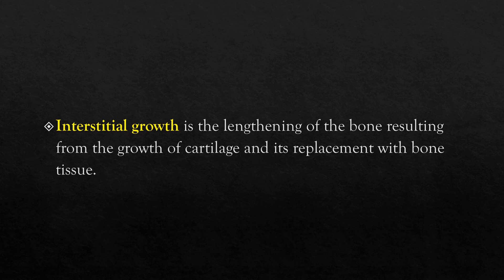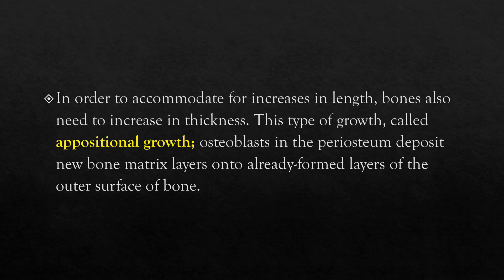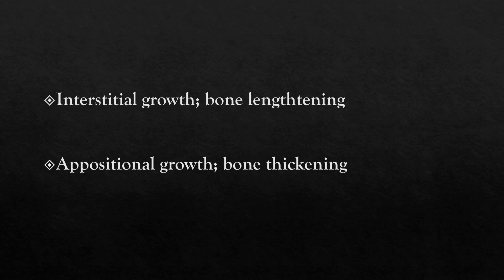Interstitial growth occurs at the epiphyseal plate and continues until the person reaches teenage years. In order to accommodate for increases in length, bone also needs to increase in thickness. This type of growth, called appositional growth, happens when osteoblasts in the periosteum deposit new bone matrix layers onto already formed layers of the outer surface of the bone. The clinical projection is that interstitial growth is lengthening and appositional growth is thickening of bone.